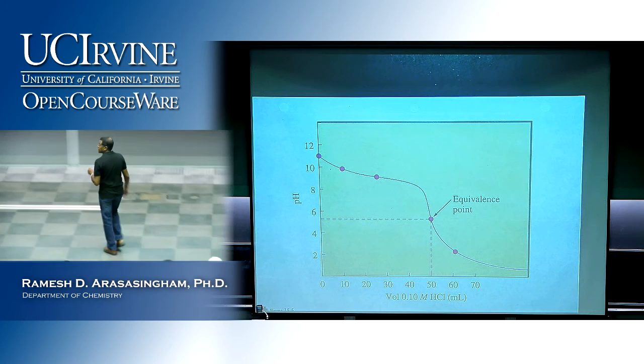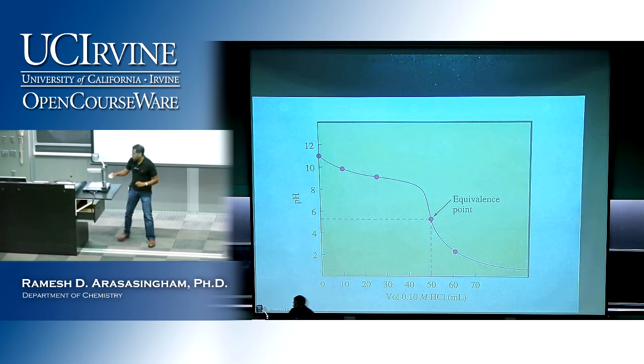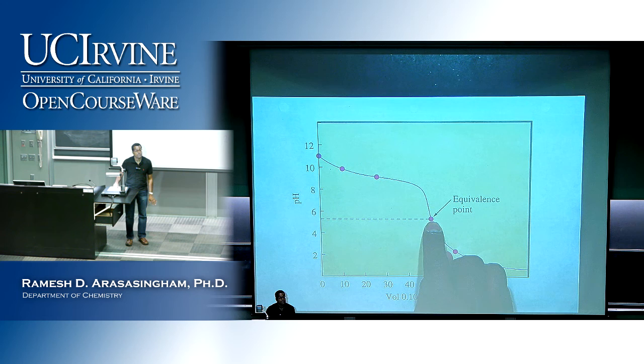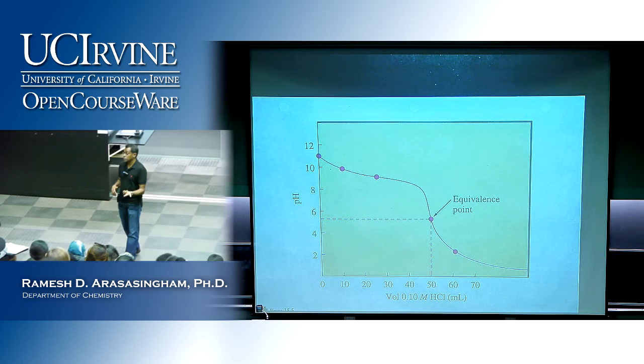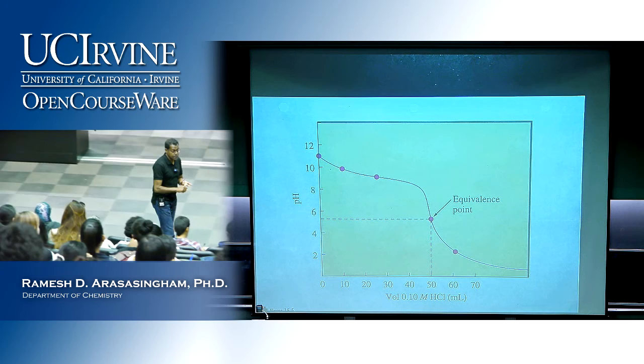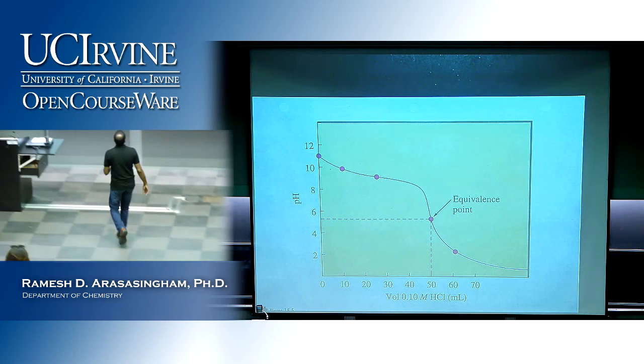As you add more and more acid, your buffer gets completely swamped and everything converts to NH₄⁺. At the equivalence point, all you have is NH₄⁺, Cl⁻, and water. Cl⁻ is the conjugate base of a strong acid — that's neutral. Water is neutral. NH₄⁺ is the conjugate acid of a weak base, so it's acidic. Therefore the pH is less than 7.